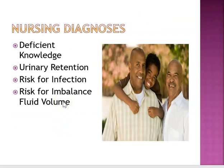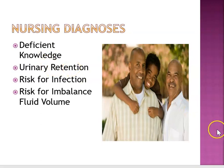Nursing diagnoses include deficient knowledge — educate the patient that they will have a catheter for up to three days post-surgery, though typically 24 to 48 hours. Upon removal of the catheter they'll have frequency and urgency — increase fluid intake and teach Kegel exercises. For urinary retention, teach double voiding: void, wait three to five minutes, and void again. Avoid intake of large volumes of liquid at one time — space it out.